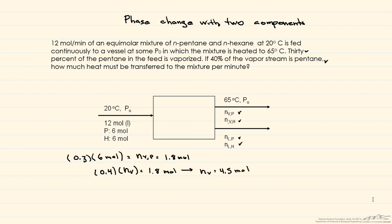So there are a number of ways you can do this to figure out the rest of it, but one of the things that you know is if 1.8 moles of the pentane is vaporized, then the rest of it has got to be in the liquid stream, and that's equal to 4.2 moles. Now, we know that the liquid stream here has got to equal 12 minus 4.5, and so that's equal to 7.5 moles. And we know that 4.2 moles of it is pentane, so the number of moles of liquid that are hexane is equal to 3.3 moles.